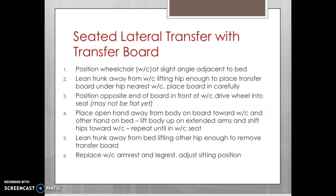Lifting and scooting is the preferred method. For a transfer board transfer, described in the textbook with sequential photos and supplemental videos, the wheelchair and bed are positioned at a slight angle. The patient leans away from the surface they're heading towards to get the board placed underneath their ischial tuberosity, then moves along that transfer board until they are safely on the new surface. This concludes part one.